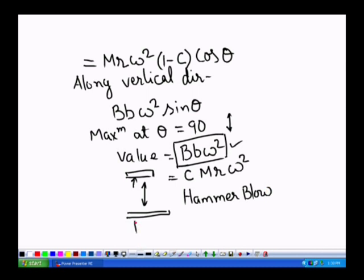Also, this capital B, small b, omega square, this is a force that is acting upward direction, means when we have a crank at 90 degrees, that should be taken by the mass times g.